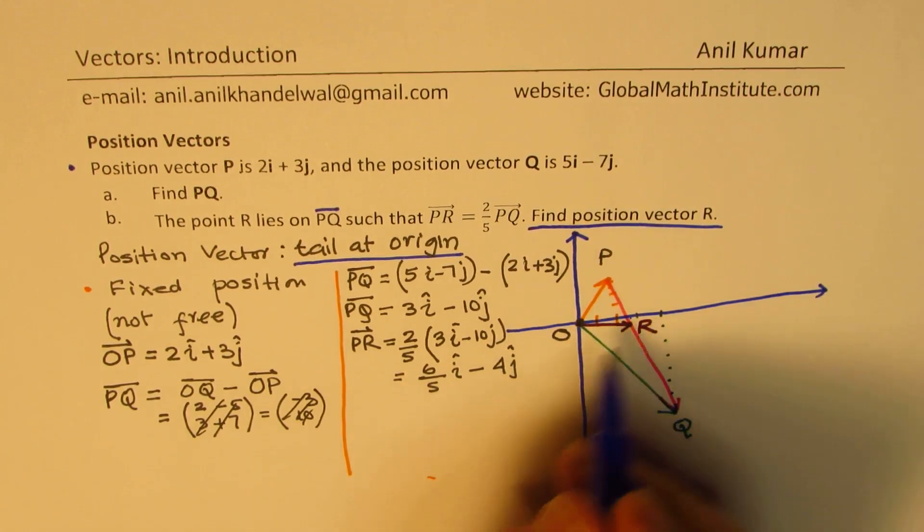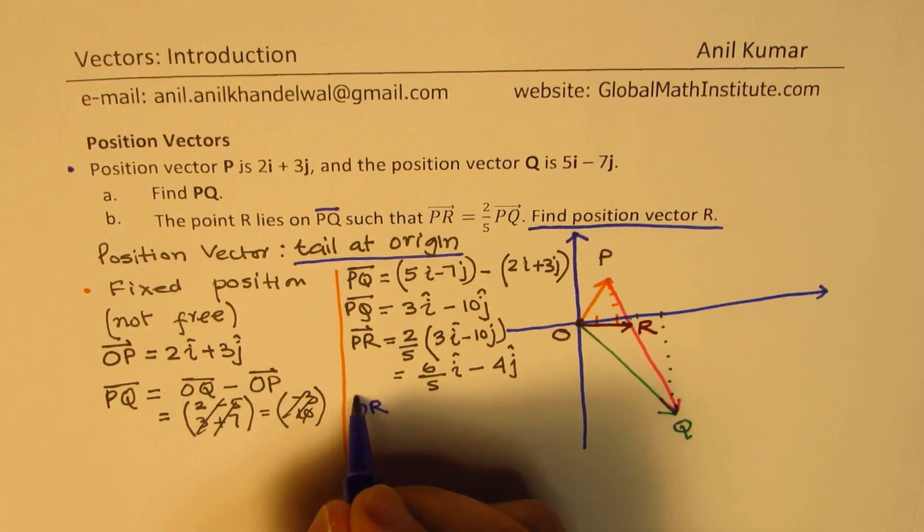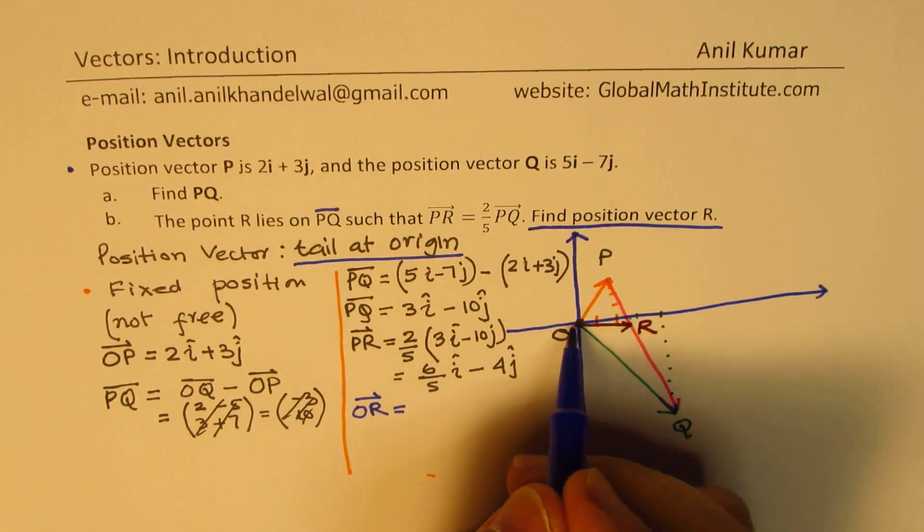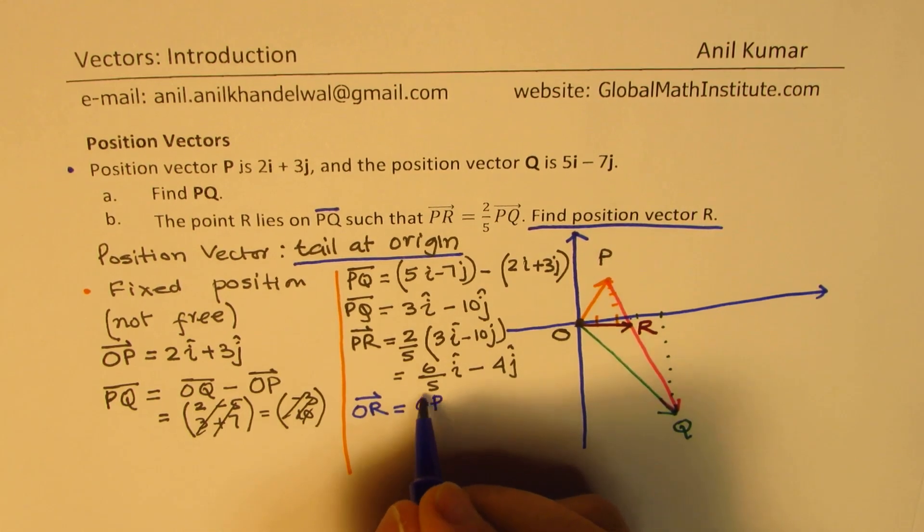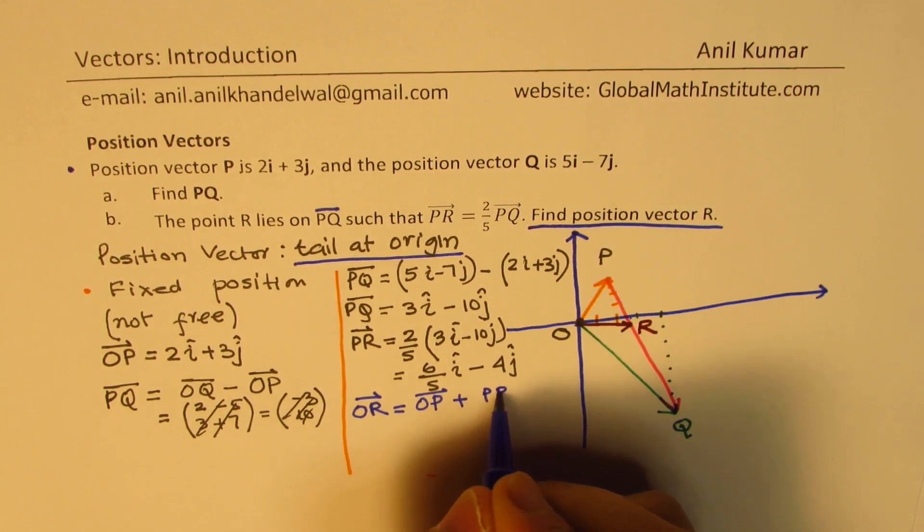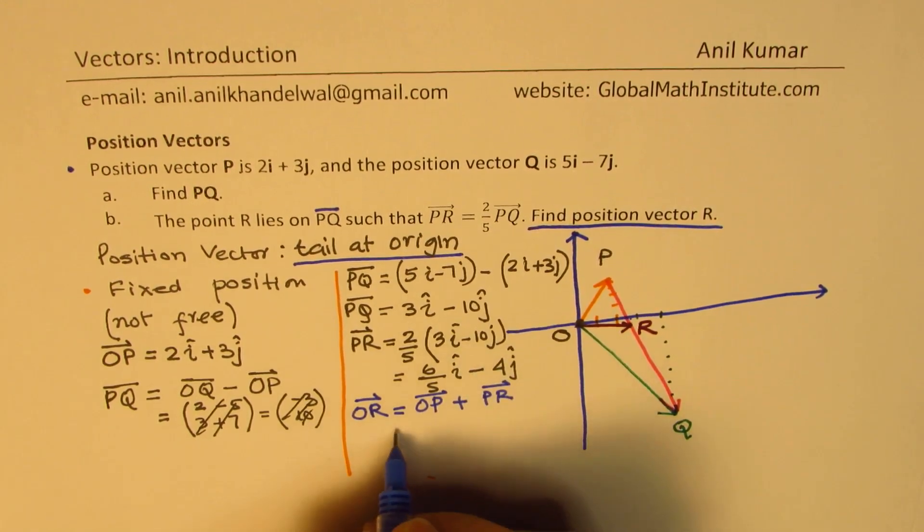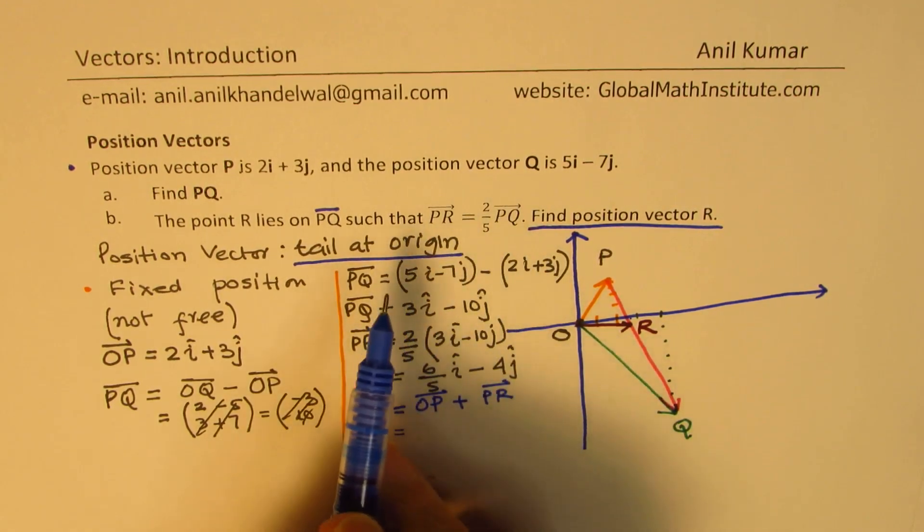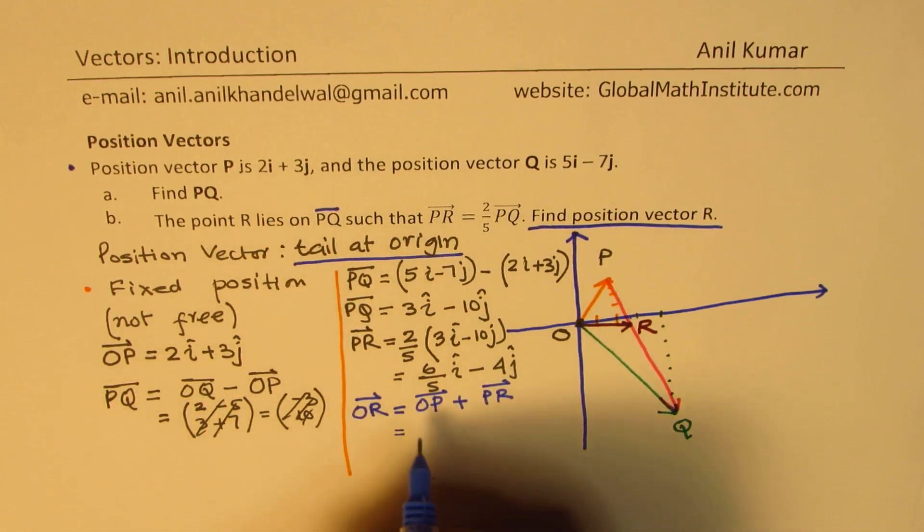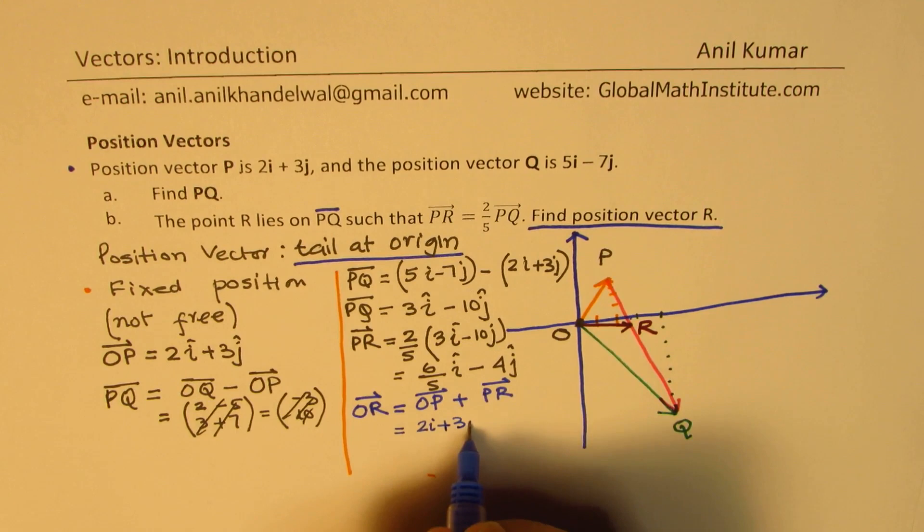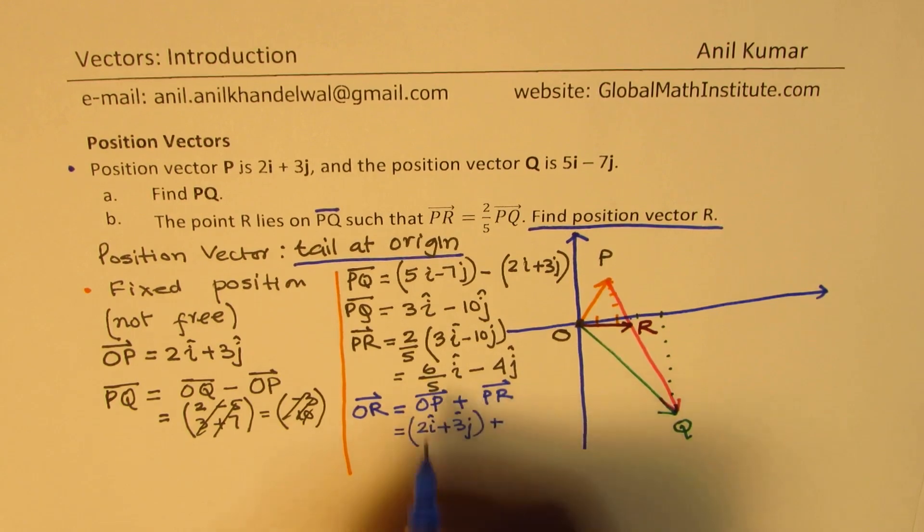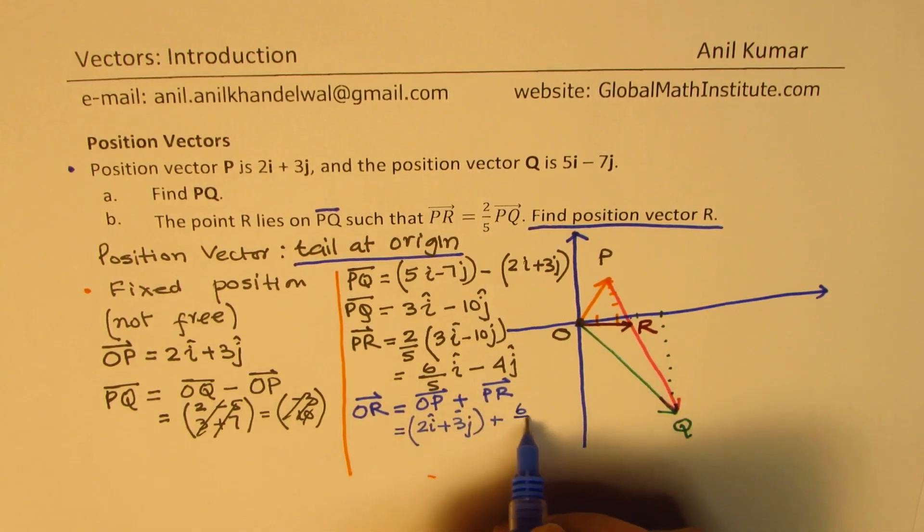Now what are we supposed to find? We are supposed to find O to R. Now when we say, find position vector R, then what is the position vector R? So we know what PR is. So what is OR? OR is the position vector. So O R, O to R will be OP plus PR. Is that clear to you? OR is OP plus PR. So let's do this math now.